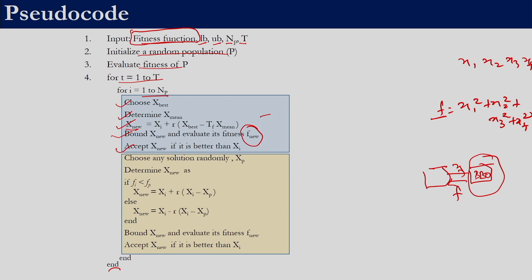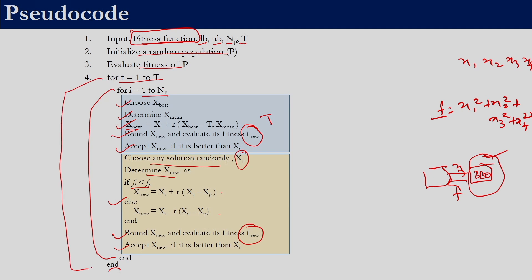The first member undergoes the teacher phase, then undergoes the learner phase. For the learner phase we randomly select a member xp — this xp should not be the same as the ith member — and determine the new solution using one of the equations, selected depending upon the fitness of the ith solution and the pth partner. Once we generate a new solution we need to bound it and evaluate the fitness function again using the black box procedure, accepting the new solution if it is better than the ith member. This has to be performed for all NP members and the iteration performed t times.